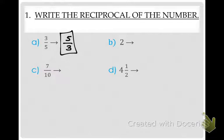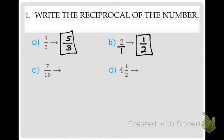Sierra, let's go over to problem B. This 2 does not look like a fraction — how would I make it look like a fraction? Put a 1 under it. And now what would the reciprocal of 2 over 1 be? 1 half. Because remember, you're just flipping the numerator with the denominator.